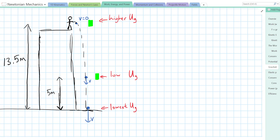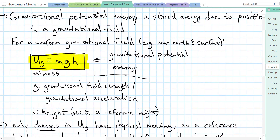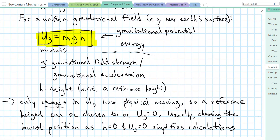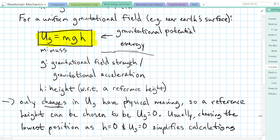Let's look at the equation for gravitational potential energy. The symbol is usually U, but sometimes it's written as GPE or PE with a subscript G for gravity. The equation is: gravitational potential energy equals mgh — m times g times h. M is your mass, g is the acceleration due to gravity, and h is the height in the gravitational field.